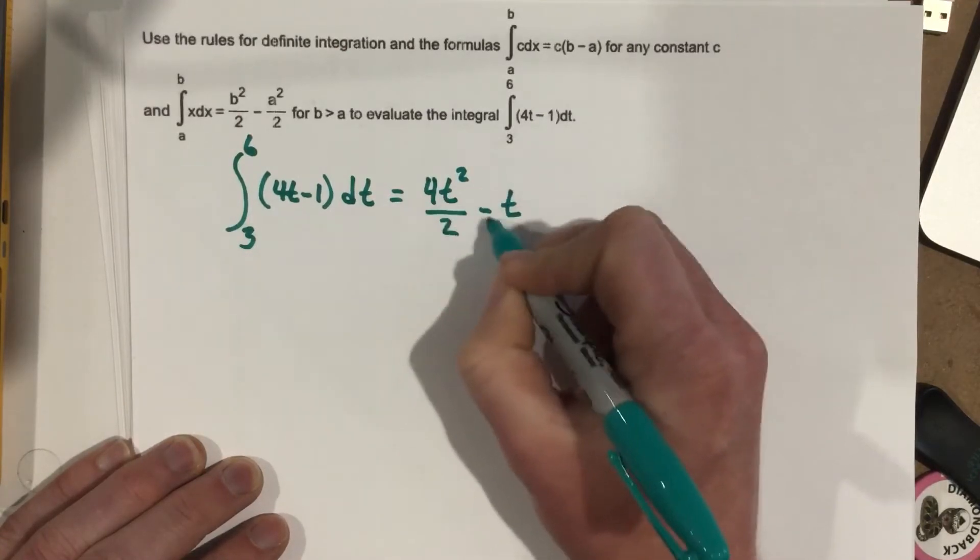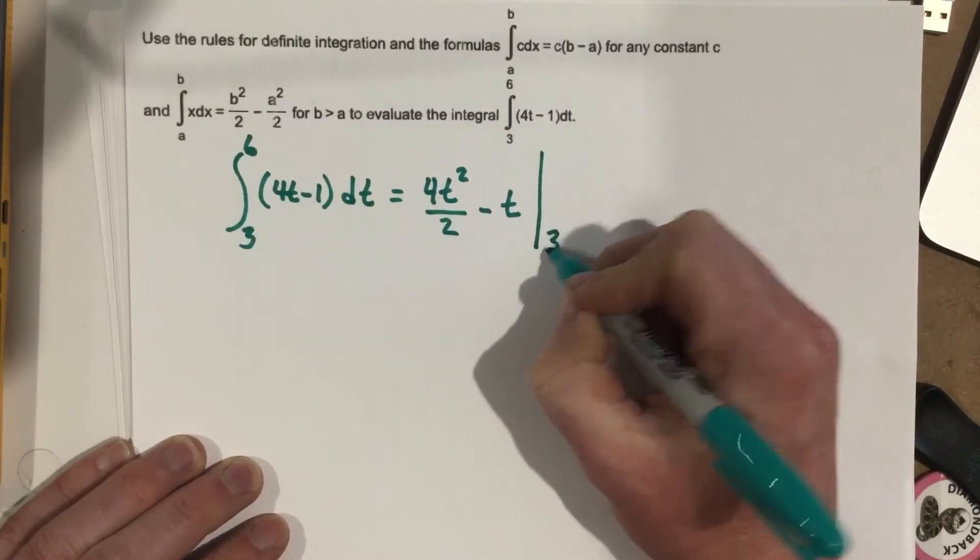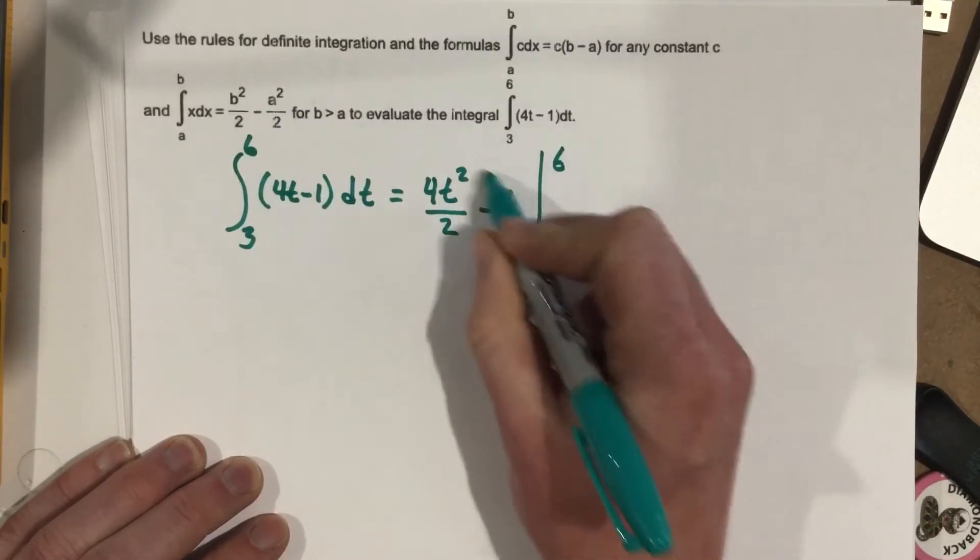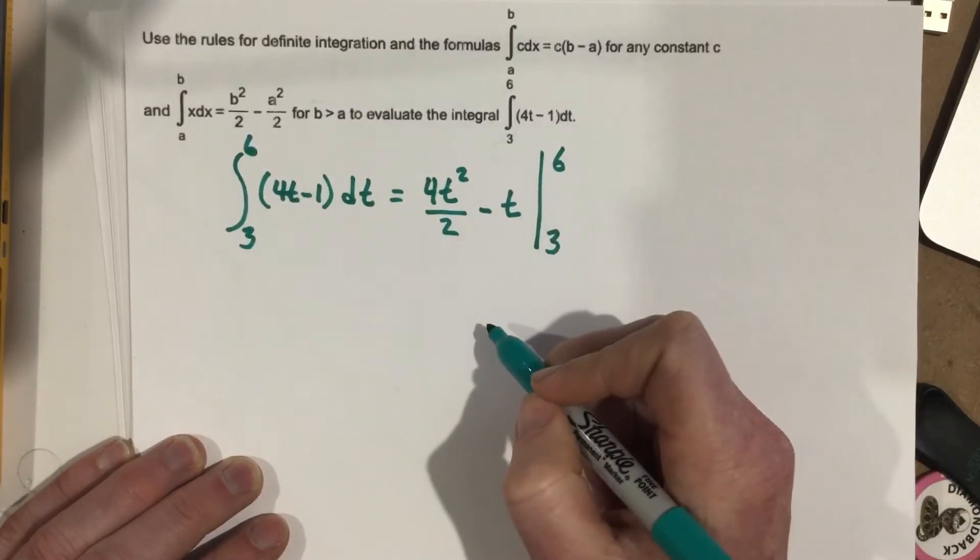Because I did the antiderivative, I've basically integrated, except for definite integrals, I still have a little piece. Not only do I have the antiderivative, but I need to then check from x values 3 to 6 what the area is.